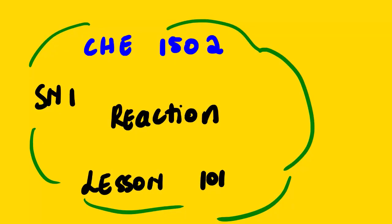Our lesson for today is chemistry 1502, and the topic is SN1 reaction. This is lesson 101. We've already talked about SN2, and the reason we started with SN2 is that it's much simpler — understanding SN2 helps us understand SN1. Towards the end of this lesson series on nucleophilic substitution, we will look at a comparison, but as we continue we'll also relate SN1 concepts with SN2 mechanism.